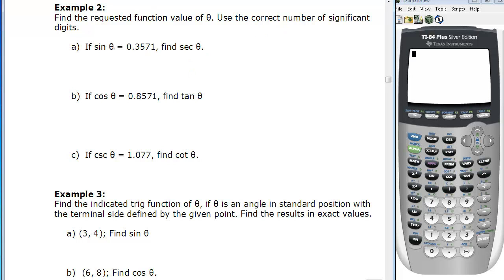So we're given that the sine of theta is equal to 0.3571. We're asked to find secant theta. Well, that's a two-step process. First, we're going to have to find theta, and then evaluate what the secant of that particular angle will be.